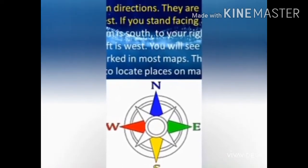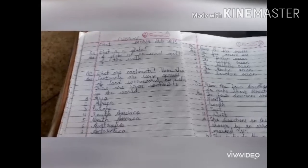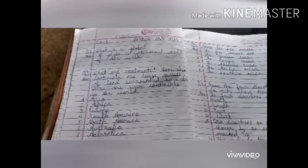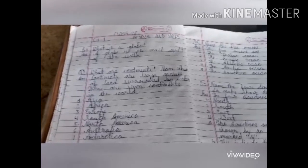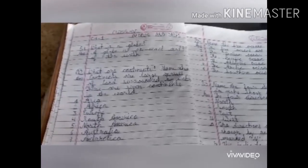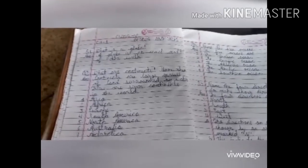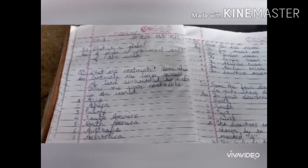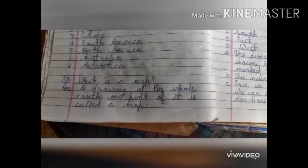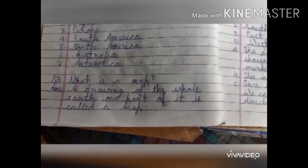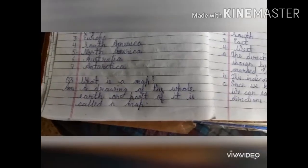Now students, we will start the question-answer. Question 1: What is a globe? Answer: A globe is an exact model of the Earth. Question 2: What are continents? Answer: Continents are large masses of land surrounded by water. There are seven continents in the world: Africa, Europe, South America, North America, Australia, and Antarctica. Question 3: What is a map? Answer: A drawing of the whole Earth or part of it is called a map.